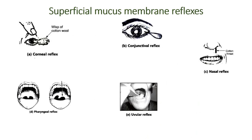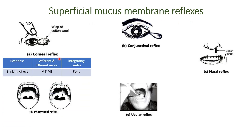Let's see the procedure for various types of reflexes and the responses to be observed. First, we'll see the superficial mucous membrane reflexes. The first one is the corneal reflex. We'll touch a side of the cornea of an individual with a fine cotton swab stick while the individual is looking at a far wall. The response is that the individual blinks the eye. The afferent and efferent nerves involved are the fifth and seventh cranial nerves, and the integrating center is the pons.